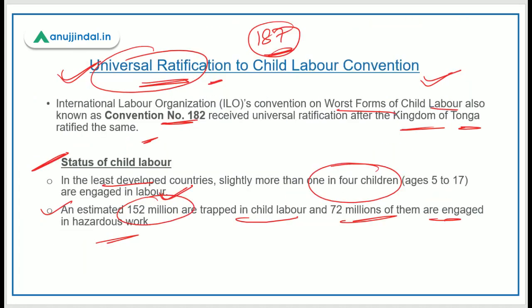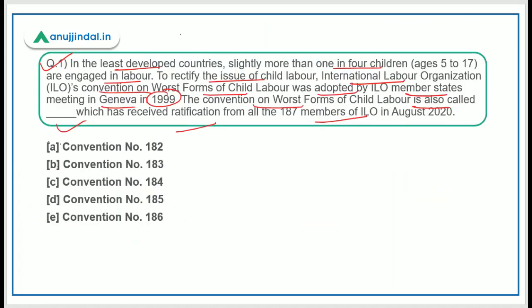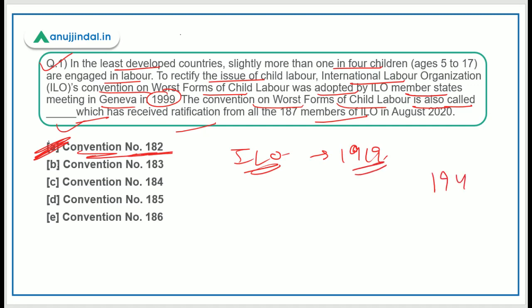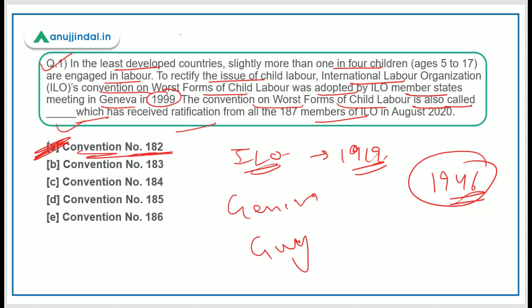So the answer is: Worst Forms of Child Labour is also called Convention Number 182 of the ILO. ILO was founded in 1919 and became part of the United Nations in 1946. It is headquartered in Geneva and headed by Guy Ryder, who is the Director General of the International Labour Organization.